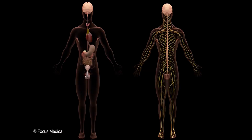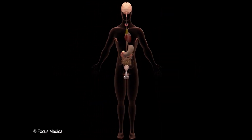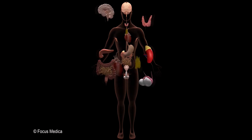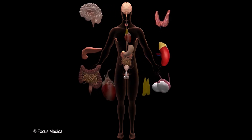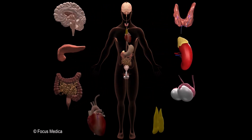Types of glands. A gland is an organ which produces and releases substances that perform a specific function in the body. There are two types of glands: endocrine gland and exocrine gland.